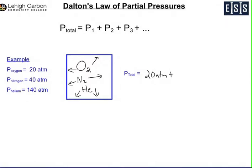So 20 atmospheres plus 40 atmospheres from the nitrogen plus 140 atmospheres from the helium gives a total of 200 atmospheres. Very simply, Dalton's Law says each element exerts its own pressure on the container, and you sum those pressures together to get the total pressure.